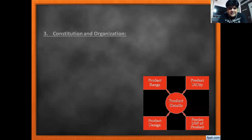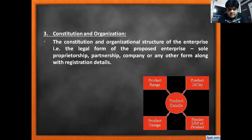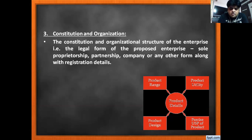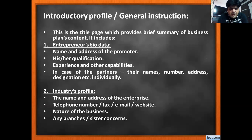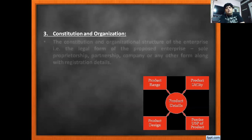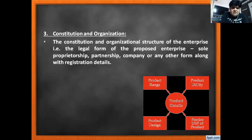The third part is called Constitution and Organization. The constitution and organization structure of the enterprise refers to the legal form of the enterprise — that would be sole proprietorship, partnership, company, or any other legal form of registration. Once you are done with entrepreneur's bio data and industry profile, you have to talk about what legal organizational form you are going to give your venture.